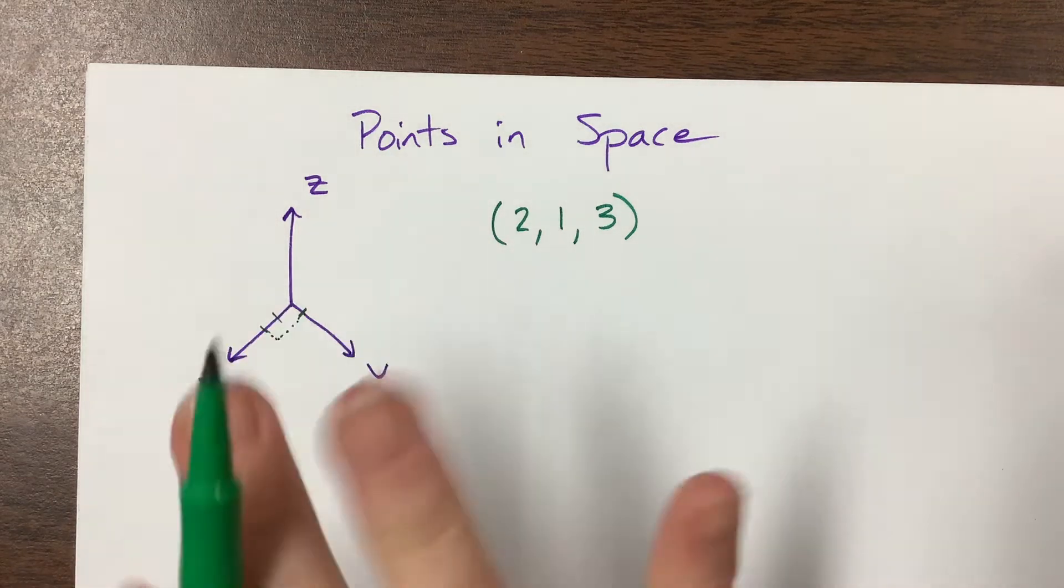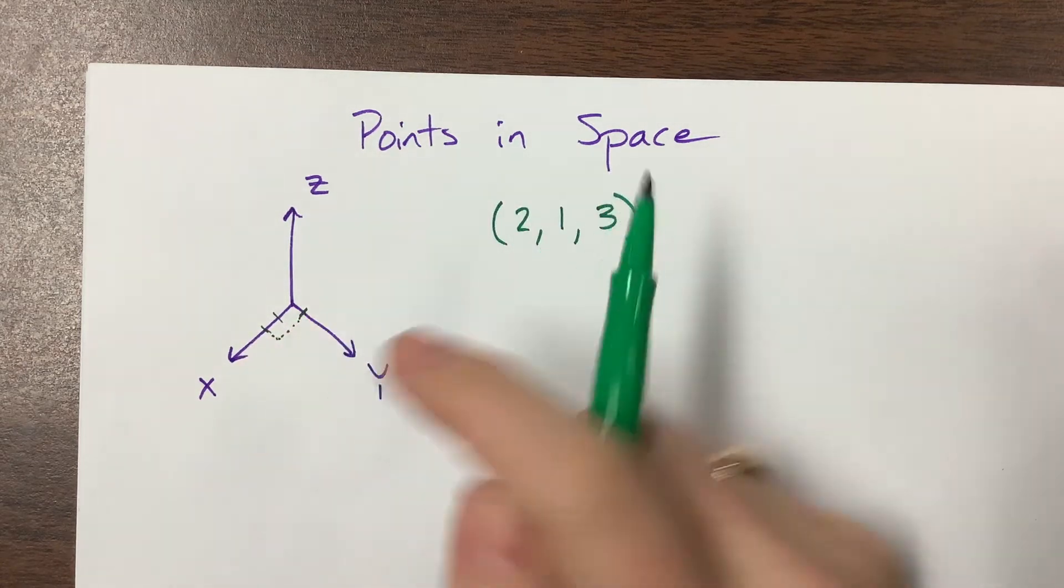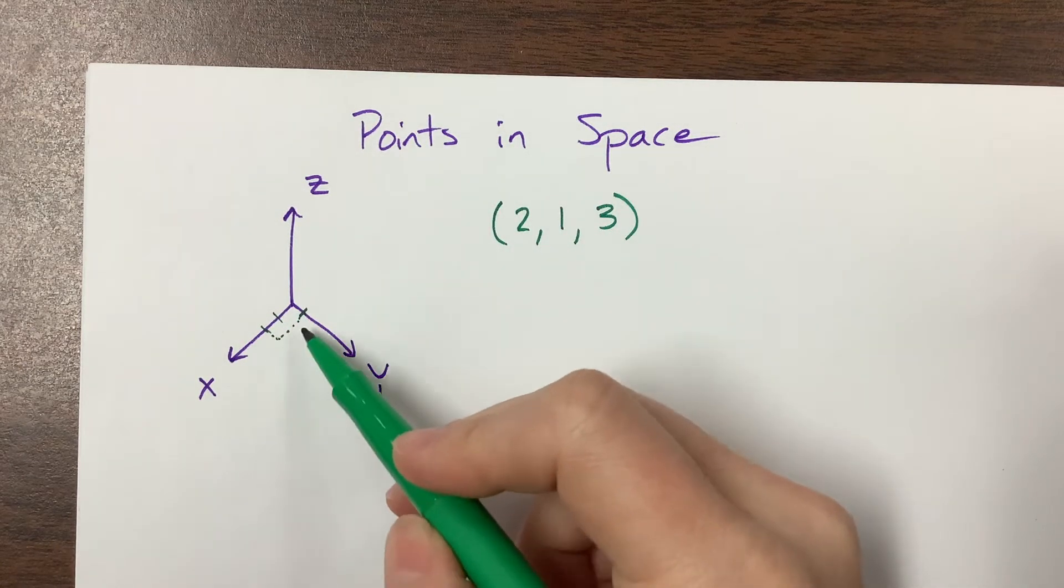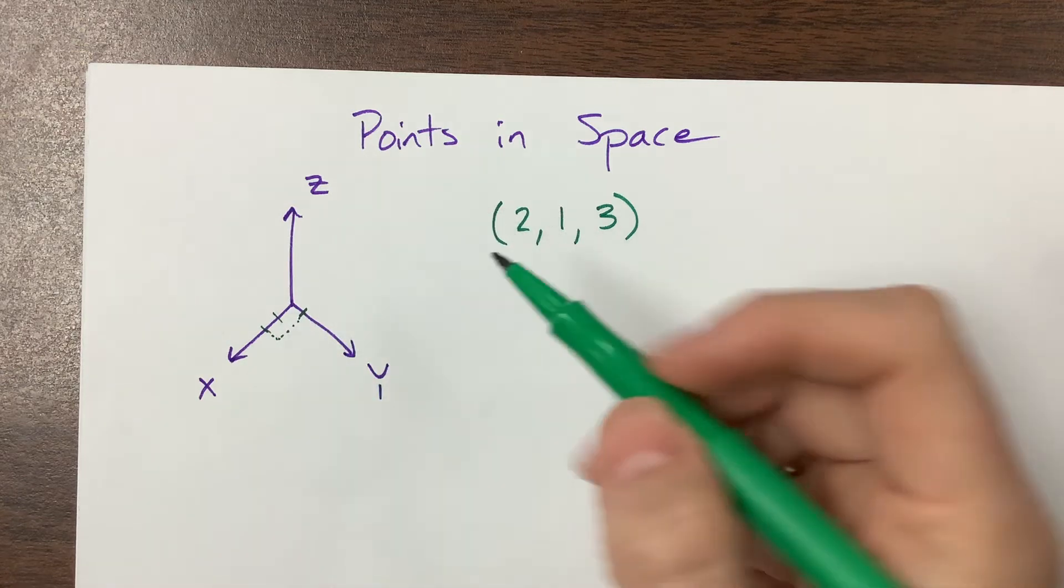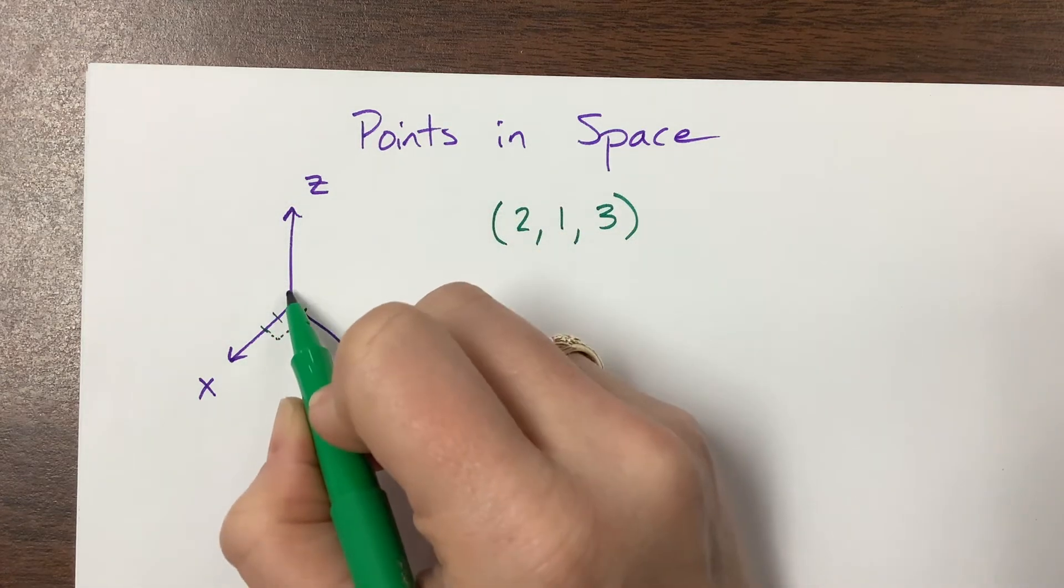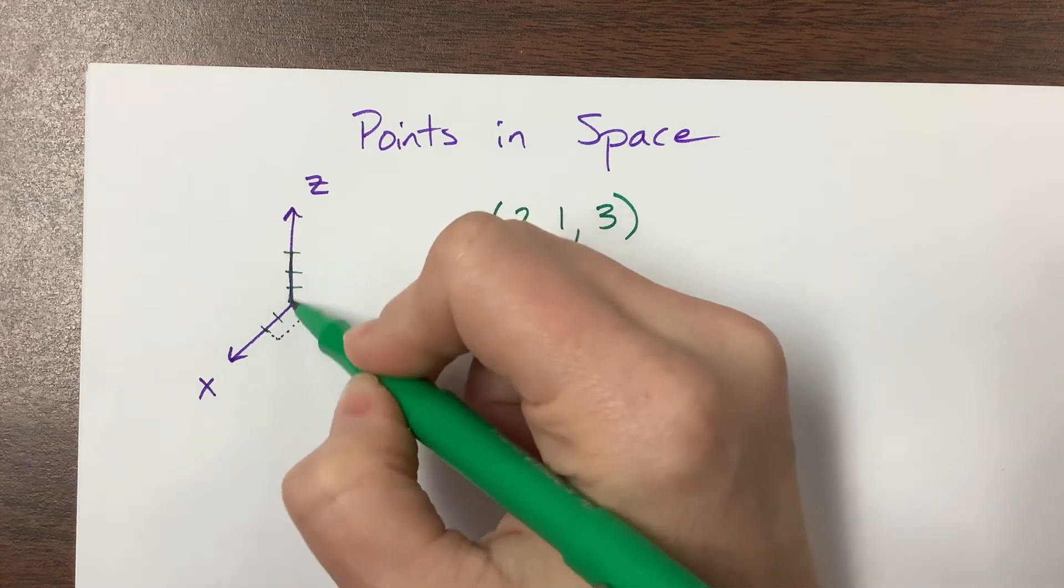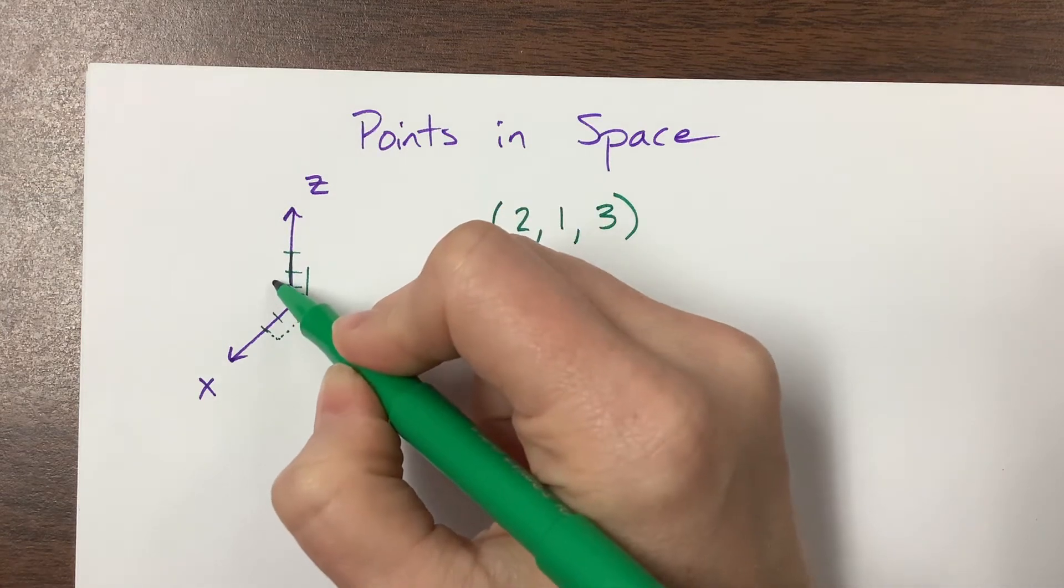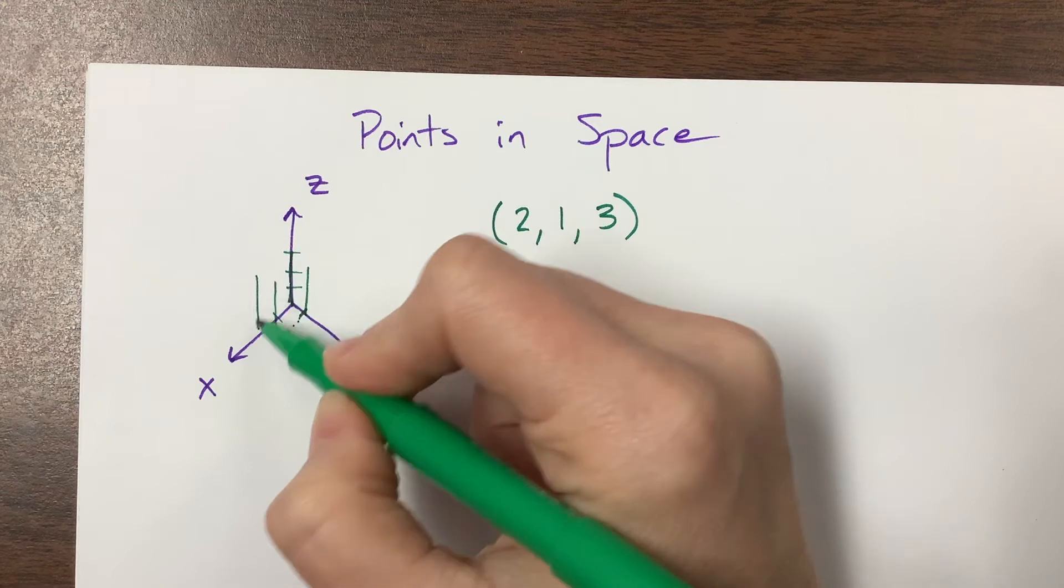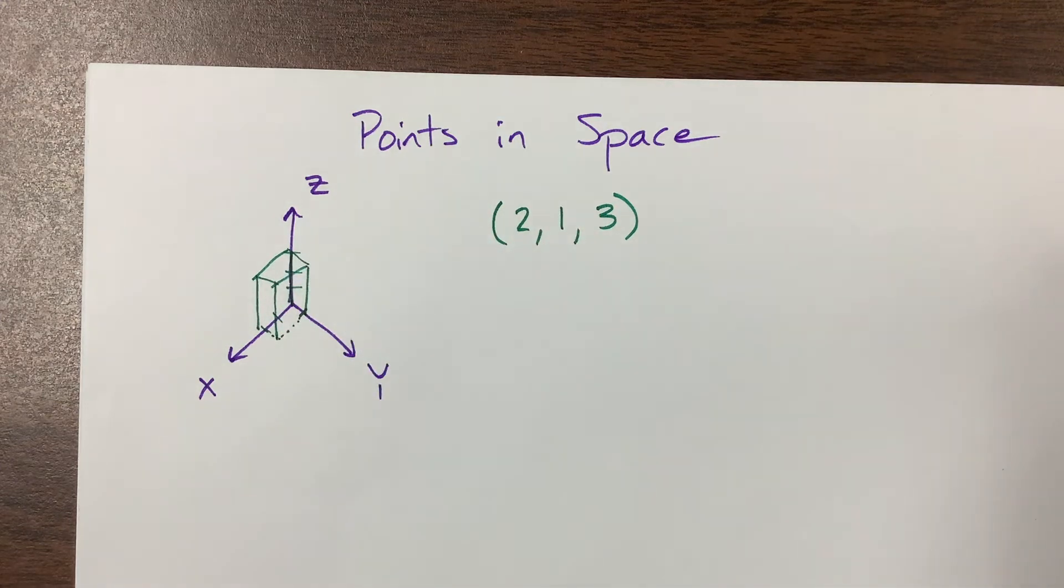But when we take that three dimensional object and lay it flat, these things start to look like parallelograms. Notice this side here is parallel to that and this stays parallel here. Then our z value means we're going to come up 1, 2, 3 like that. And we're going to take that same length and do it on all four corners.